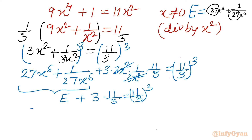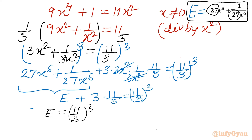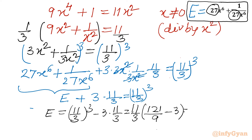So our expression E equals (11/3)³ minus 3 times 11/3. I can see 11/3 is common: E equals (11/3) times ((11/3)² minus 3) = (11/3) times (121/9 minus 3) = (11/3) times (121 minus 27)/9 = (11/3) times 94/9. So if I take the product, the answer is 1034/27.